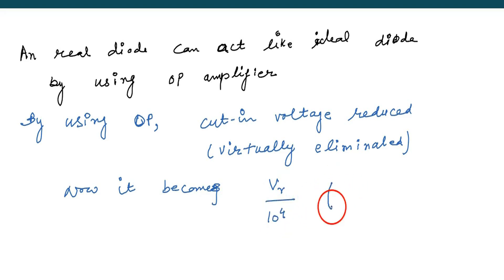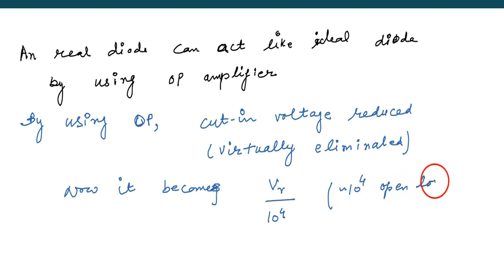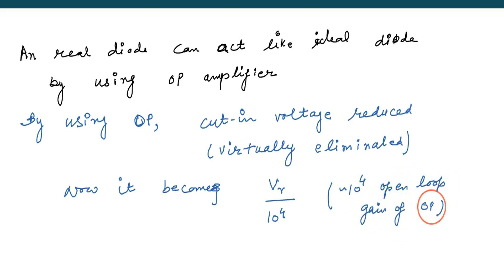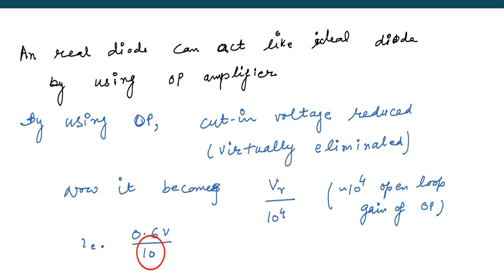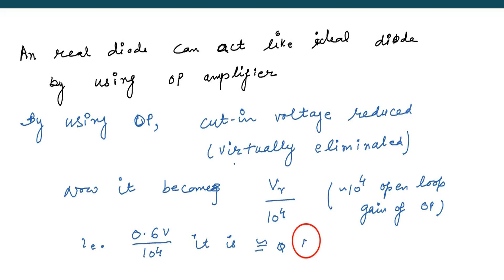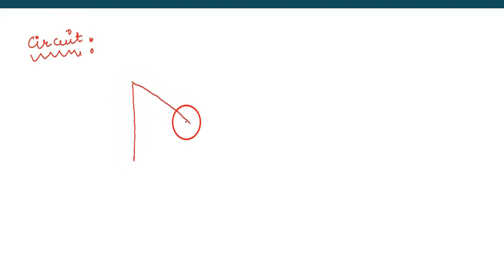The cut-in voltage becomes V-gamma divided by 10^4 or 10^5, which is the open-loop gain of the op-amplifier. V-gamma is 0.6, so 0.6 divided by 10^4 approximately becomes 60 microvolts — too small. So that cut-in voltage is now virtually eliminated.